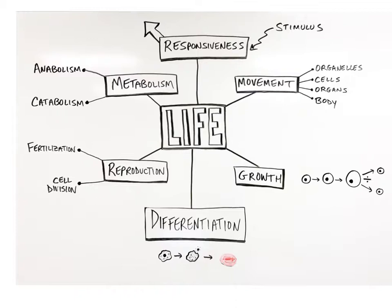Catabolism is the opposite of anabolism. Catabolic reactions break down large, complex chemicals into small, simple chemical building blocks. You can remember this word from its prefix 'cata,' found in words like cataclysm and catastrophic, which refer to destruction — 'cata' means down, as in breaking something down. All of the digestive reactions along the GI tract that break down complex carbohydrates into simple sugars and proteins into amino acids are examples of catabolic reactions.